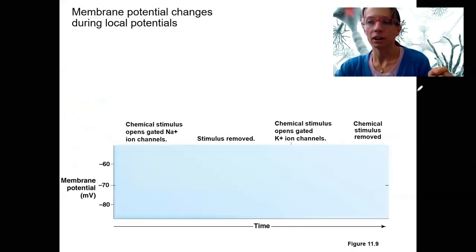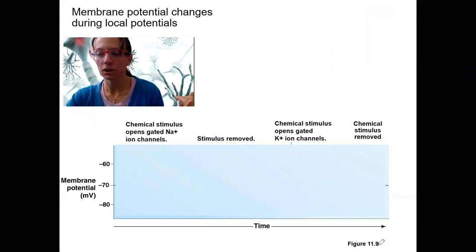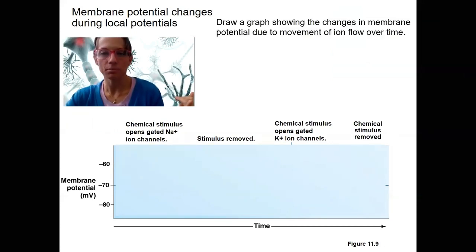On here, what I'd like you to do is graph the membrane potential changes during a local potential. So this graph here is similar to what I drew in that previous slide, over time on the x-axis, membrane potential on the y-axis. And I've got some different stimuli here, or removal of stimuli, that I'd like you to pay attention to. So what we're going to do is draw a graph showing the changes in membrane potential. That means up, down, over time, due to the movement of the ion flow over time.